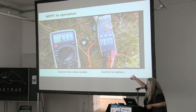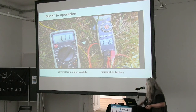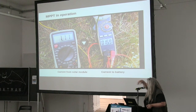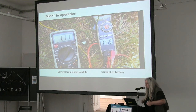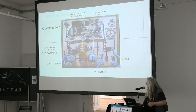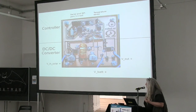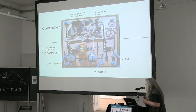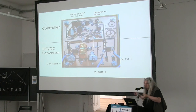This is one of my first tests with a very early prototype. On the left hand side you see the current measured coming in from the solar module, and on the right side is the current going into the battery. The current going out is greater than the current coming in — so the MPPT function works.